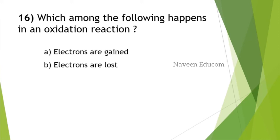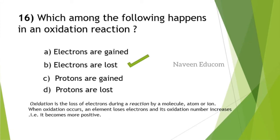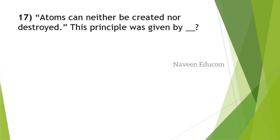Which among the following happens in an oxidation reaction? Options are electrons are gained, electrons are lost, protons are gained, protons are lost. This is one of the most important sections in coordination chemistry that you study in 12th standard. When electrons are lost, we say it's an oxidation reaction. Oxidation is the loss of electrons during a reaction by a molecule, atom, or ion. When oxidation occurs, an element loses electrons and its oxidation number increases, becoming more positive. That is pure logic.